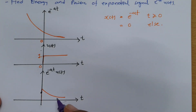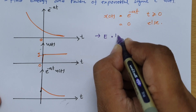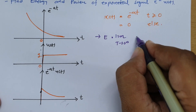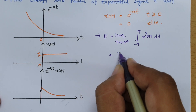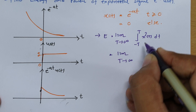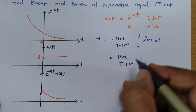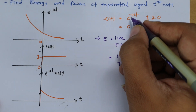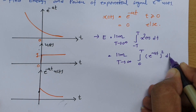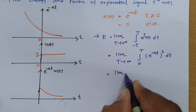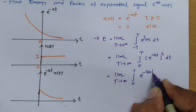Since this exponential signal is not periodic and extends over infinite time, we calculate energy using the formula: limit as T tends to infinity of the integral from minus T to T of x²(t) dt. Since the function is 0 for negative t, the limits reduce to 0 to T, and x²(t) = [e^(−at)]² = e^(−2at). So we need to evaluate the integral from 0 to T of e^(−2at) dt.